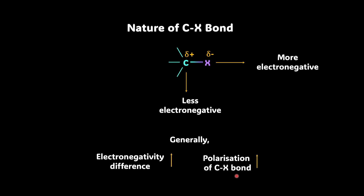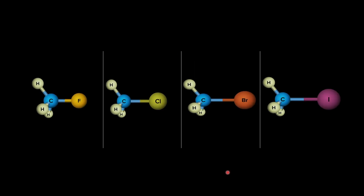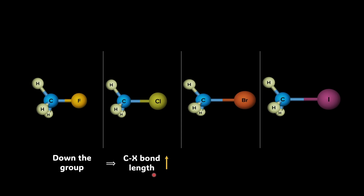But first, let's talk about the most obvious and important parameter: the bond length. When we have the carbon-fluorine bond, carbon-chlorine bond, carbon-bromine bond, and carbon-iodine bond, clearly as we go down the group the size of the atom increases. Hence, the bond length increases. So, the length of the carbon-iodine bond is maximum and the carbon-fluorine bond is minimum. As a result, as bond length increases, the bond enthalpy decreases — it's easier to break the carbon-iodine bond as compared to the carbon-fluorine bond.